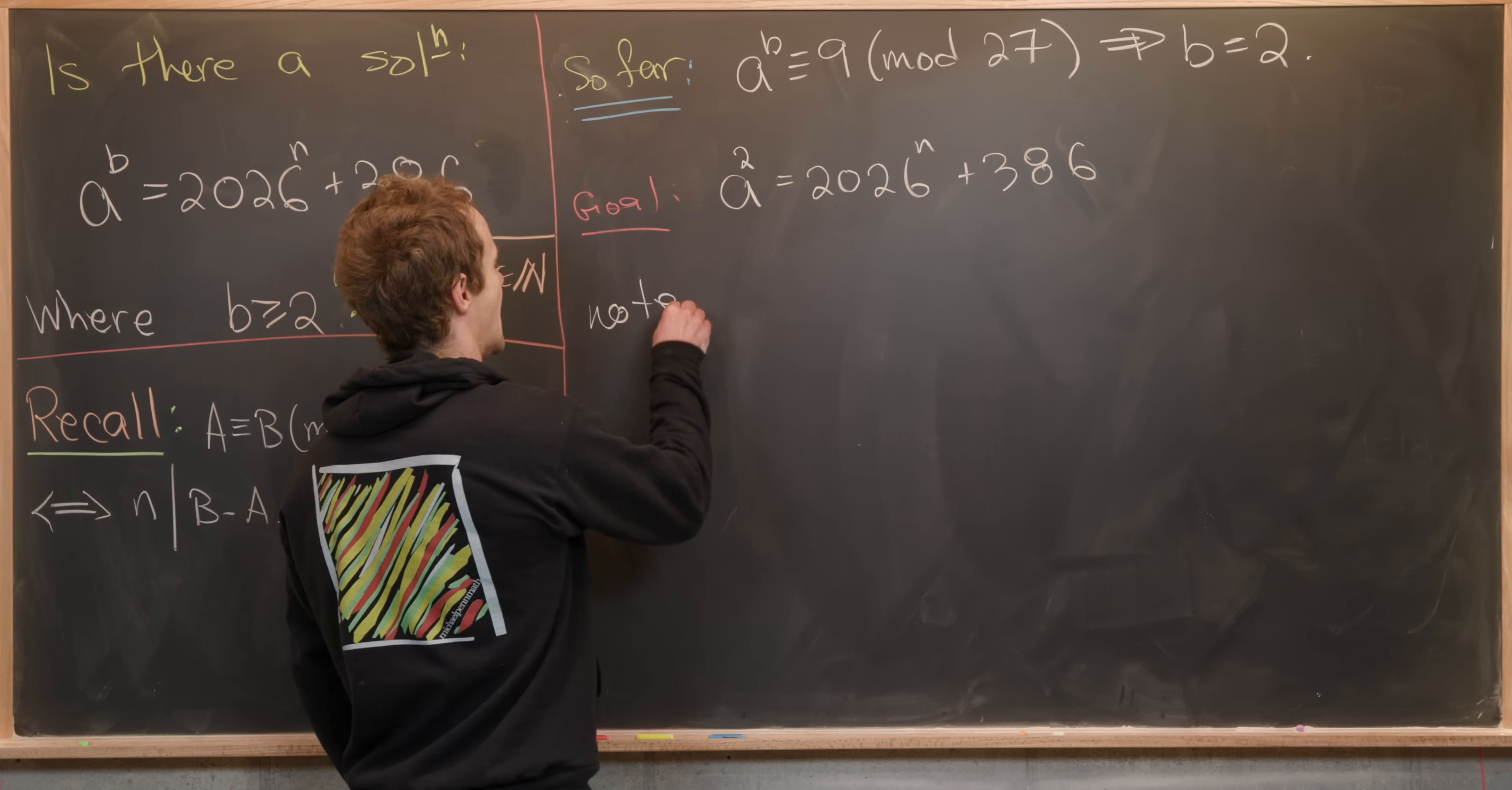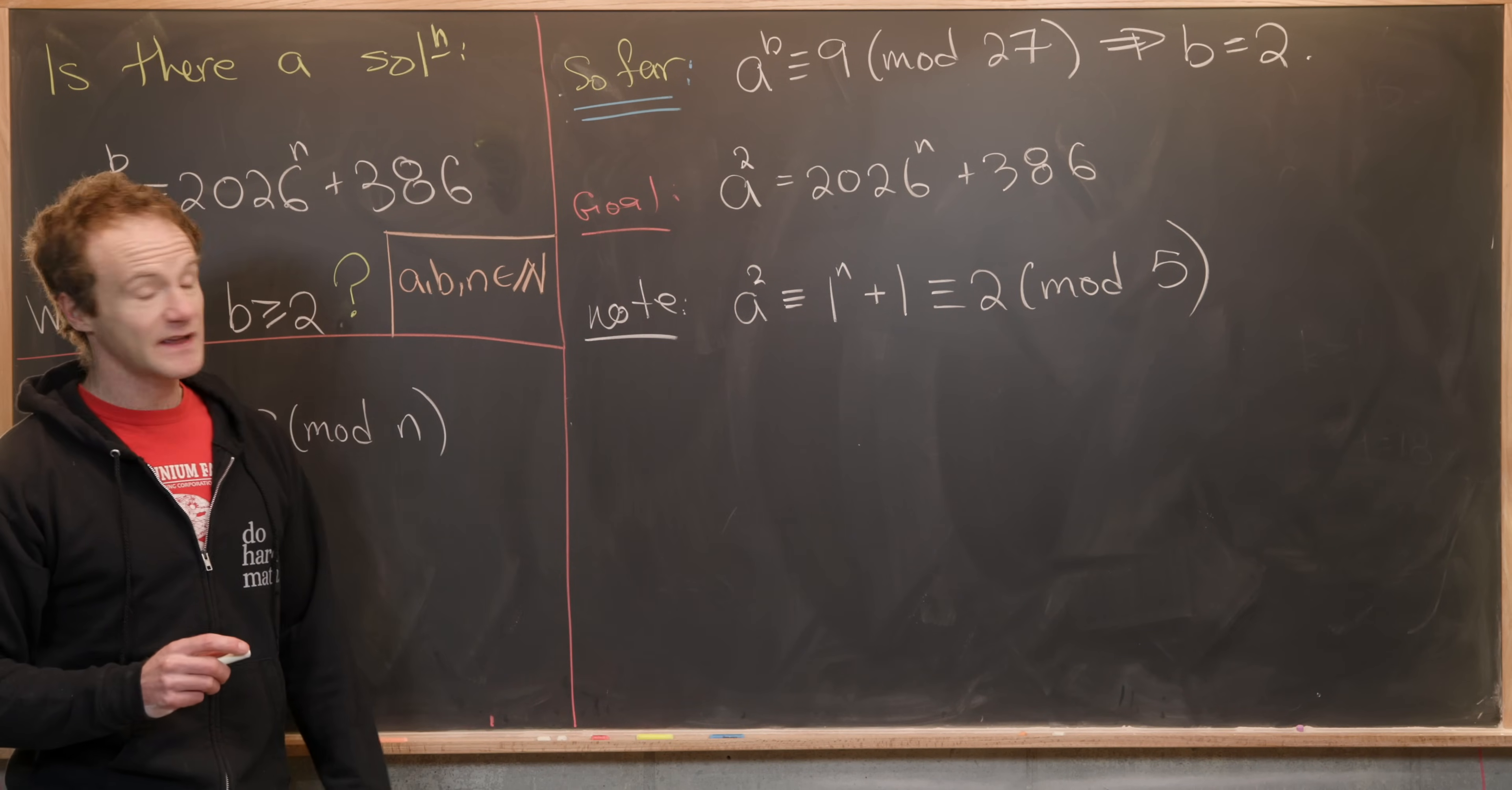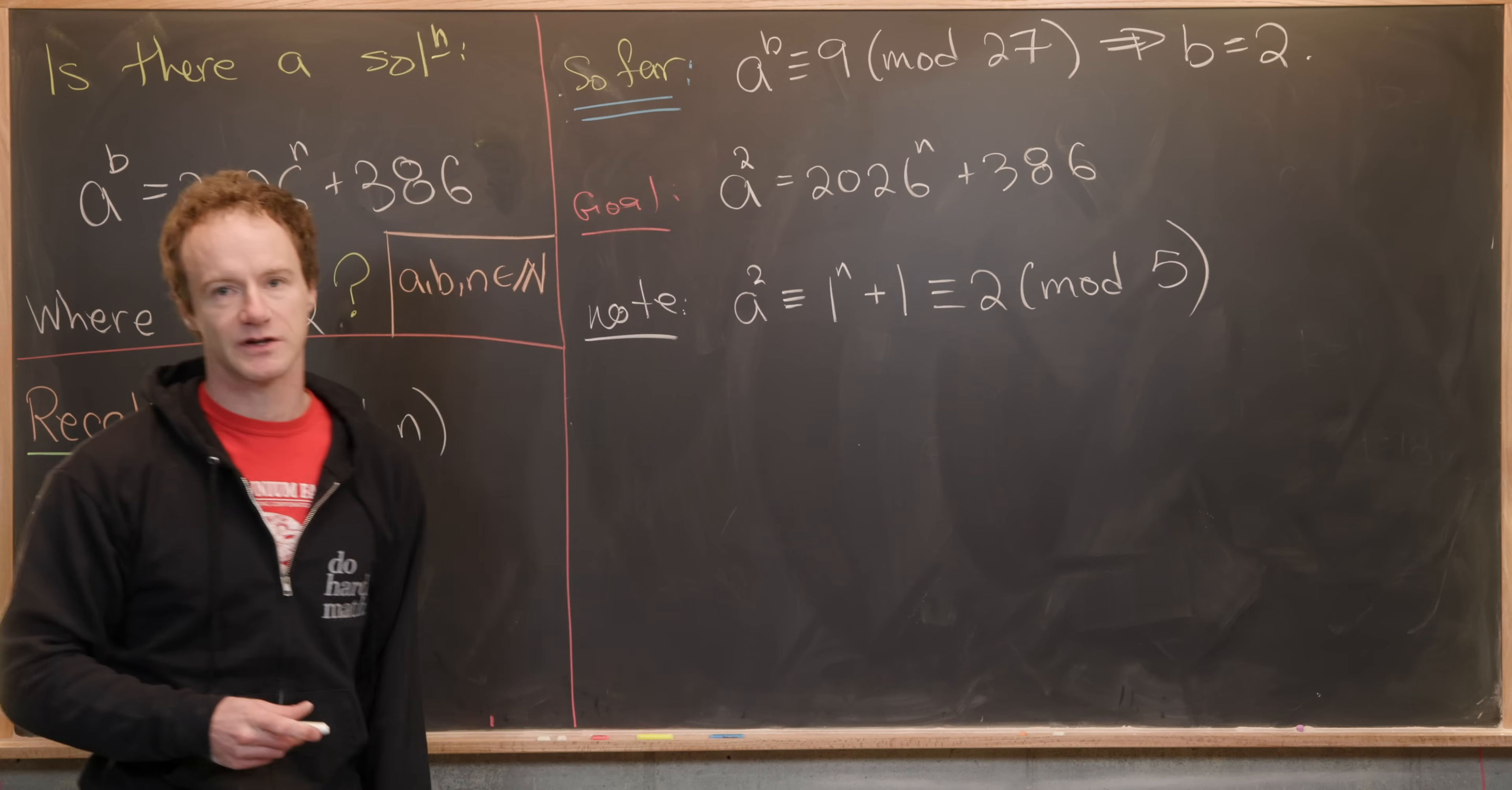So let's write that we notice that a^2 ≡ 1^n + 1 ≡ 2 (mod 5). So that means that we really at this point need to solve the congruence a^2 ≡ 2 (mod 5). If that has a solution then perhaps we can construct a solution to our equation. If this does not have a solution then that means we never had a solution to our equation.